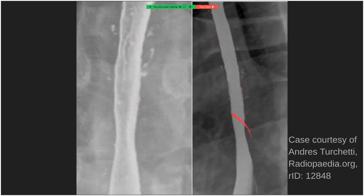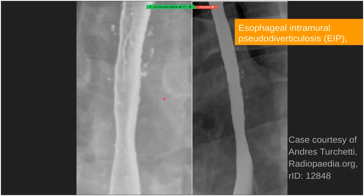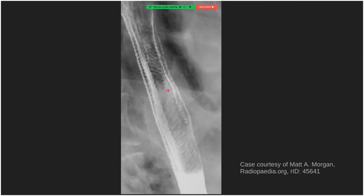This case shows double contrast esophagram on the left and single contrast on the right. There are small focal outpouchings of contrast on both sides of the esophageal lumen, some with a well-defined flask-shaped appearance. These are dilated mucus glands found in association with esophageal disease — the diagnosis is esophageal intramural pseudodiverticulosis. Candida can sometimes be cultured from these dilated glands, but the candida infection is considered a secondary infection, not the cause.